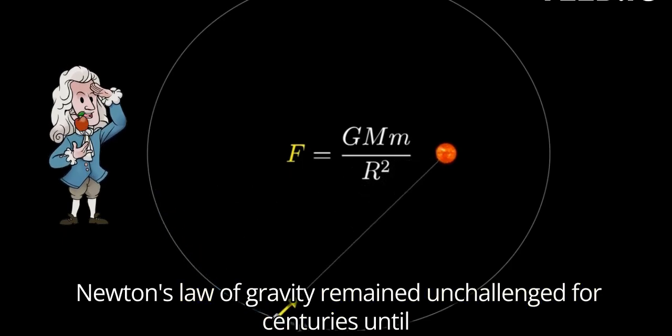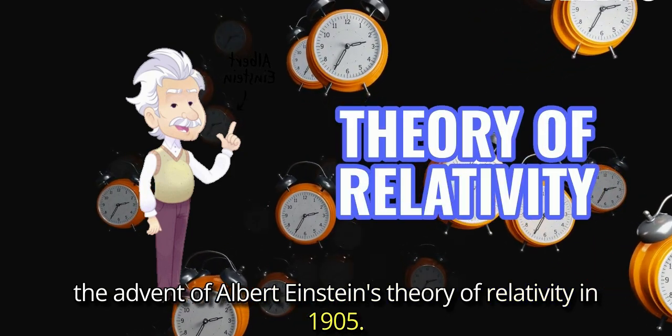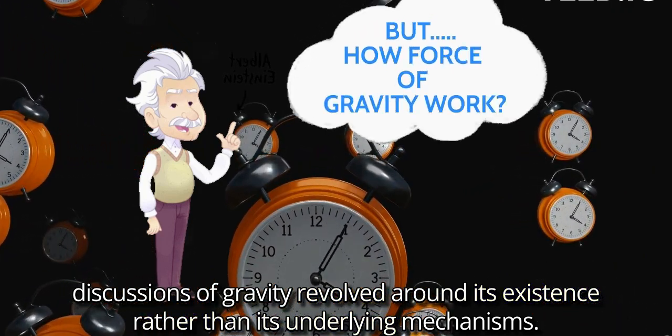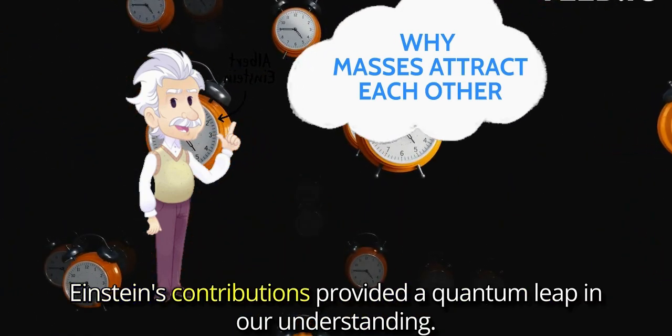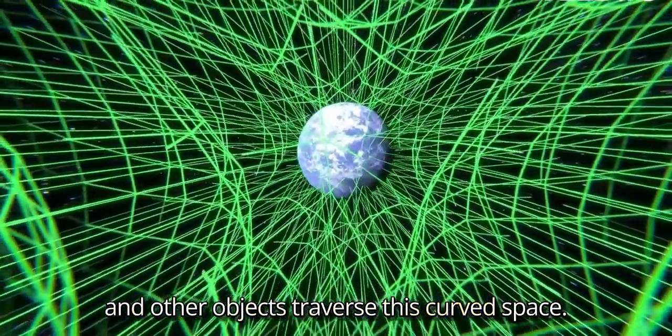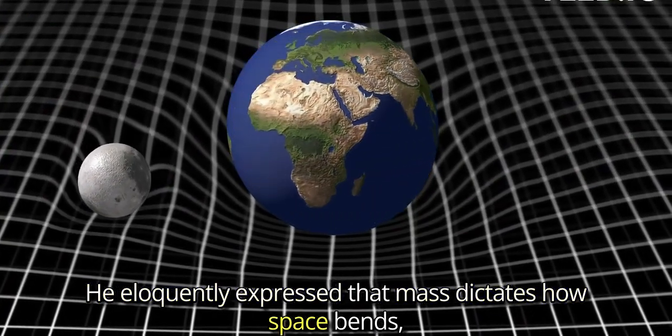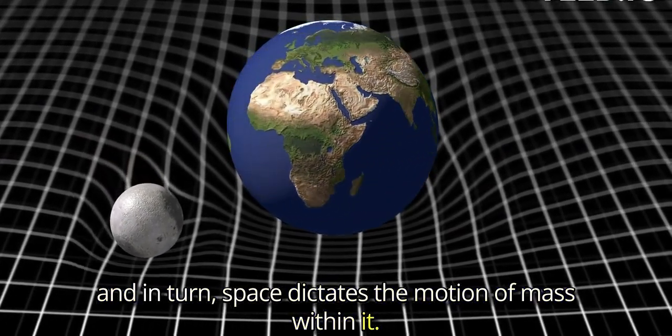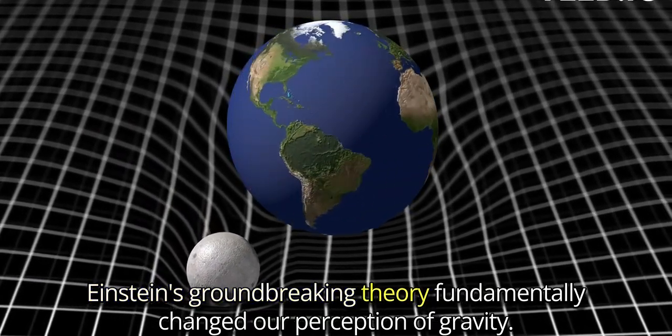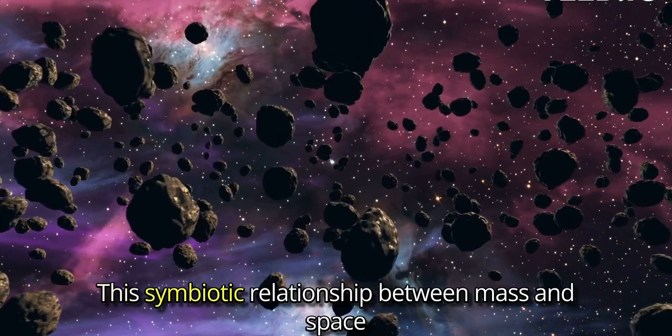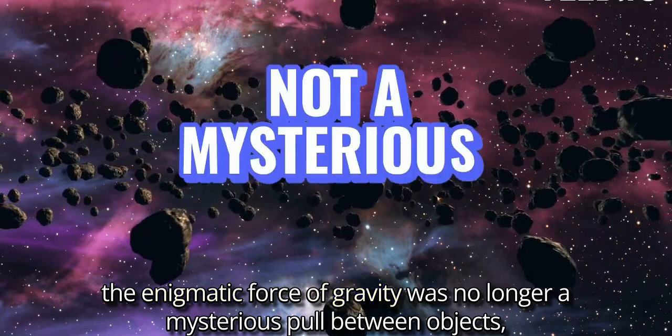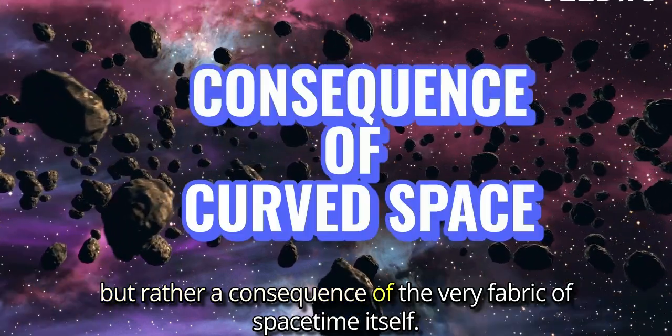Newton's law of gravity remained unchallenged for centuries until the advent of Albert Einstein's theory of relativity in 1905. Before Einstein's revolutionary insights, discussions of gravity revolved around its existence rather than its underlying mechanisms. Why masses attract each other, Einstein's contributions provided a quantum leap in our understanding. He articulated that masses curve the space around them, and other objects traverse this curved space. He eloquently expressed that mass dictates how space bends, and in turn space dictates the motion of mass within it. In his words, the force of gravity is not a distinct entity, but rather our interpretation of curved space. Einstein's groundbreaking theory fundamentally changed our perception of gravity. This symbiotic relationship between mass and space unveiled a profound truth about the nature of gravity. With Einstein's insights, the enigmatic force of gravity was no longer a mysterious pull between objects, but rather a consequence of the very fabric of space-time itself.